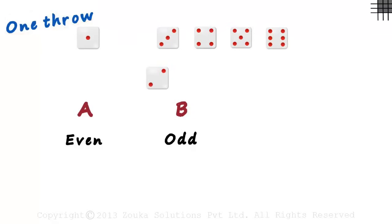Assume we get a 2 at the first throw. It is even and not odd. At the second throw, we get a 5. So it is odd and not even.